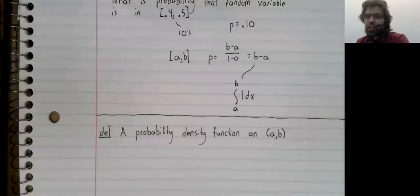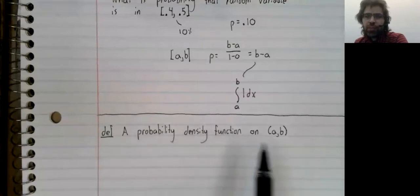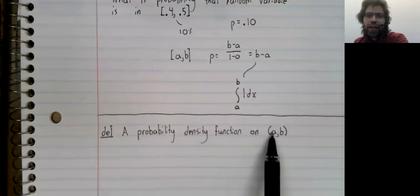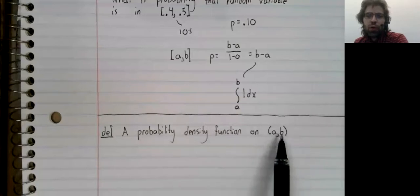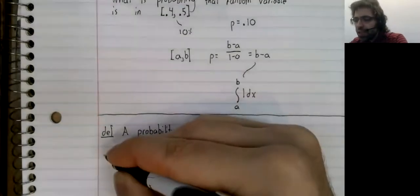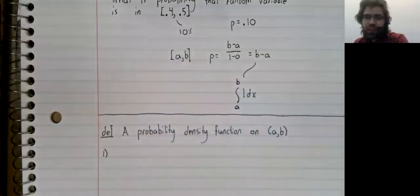Definition: A probability density function is a function on some interval. This interval could be finite, or A could be negative infinity, and or B could be positive infinity. And the probability density function needs to have three properties.